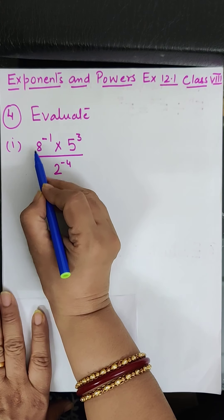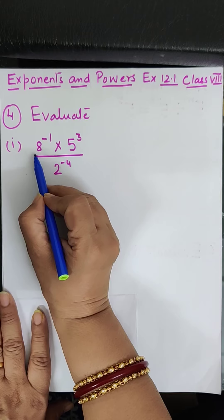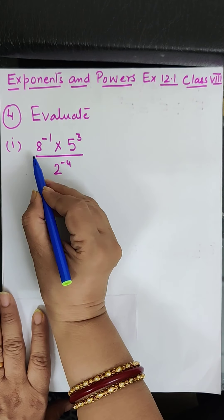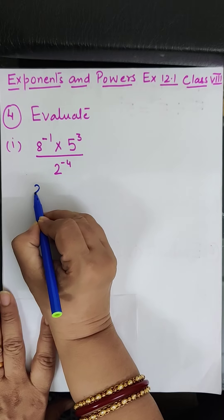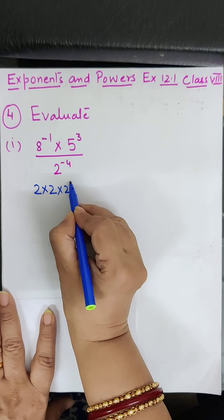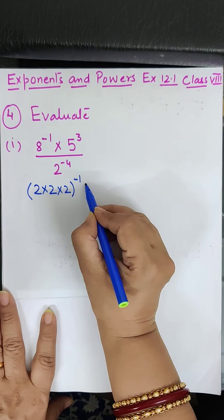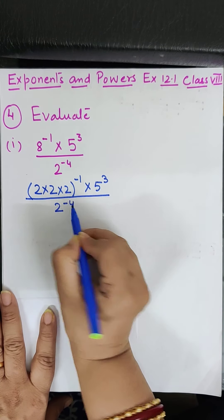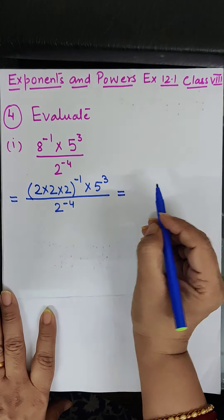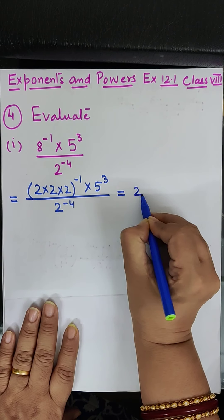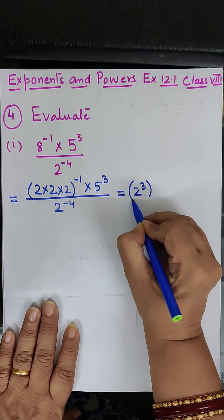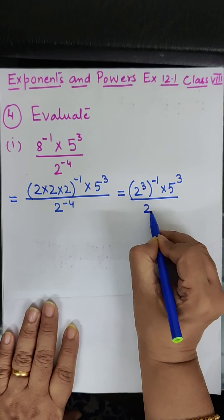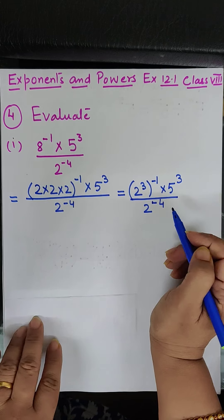In these types of questions we write the prime factorization of the numbers. So here we take 8 and write its prime factors: it becomes 2 into 2 into 2, to the power minus 1, as it is, into 5 to the power 3, upon 2 to the power minus 4. We can write 2 into 2 into 2 as 2 to the power 3, whole to the power minus 1, into 5 to the power 3, upon 2 to the power minus 4.